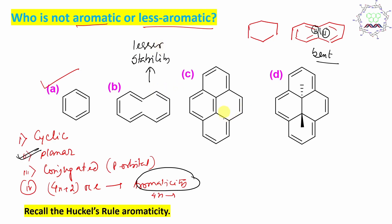What about option C? This molecule's name is pyrene. If you count the pi electrons: 2, 2, 2, 2, 2, 2, 2 — that's 7 double bonds, meaning 14 pi electrons. The same thing is true for option D as well: 14 pi electrons.